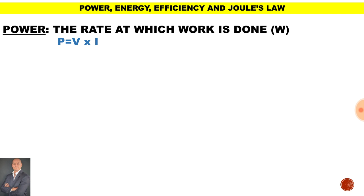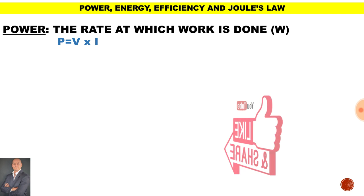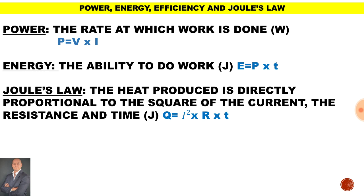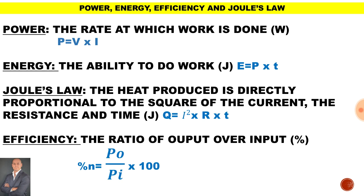Let's look at some definitions. The definition of power is the rate at which work is done. Energy is the ability to do work. Joule's law states that the heat produced is directly proportional to the square of the current, the resistance, and the time that current is flowing. Efficiency is the ratio of output over input.